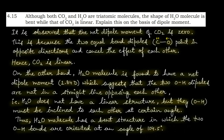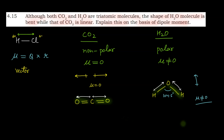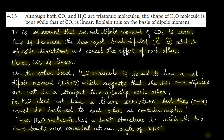यह हम VSEPR theory में भी पढ़ चुके हैं कि water molecule में bond angle 104.5 degrees होता है. तो जो दो OH dipoles हैं वो एक दूसरे के साथ 104.5 degrees के angle पर हैं. Whereas CO2 एक non-polar molecule है जिसमें C=O dipoles एक दूसरे के opposite हैं, इसलिए dipole moments एक दूसरे को cancel out कर देते हैं. Simple question था — बस dipole moment को use करना समझना है. Bye bye!